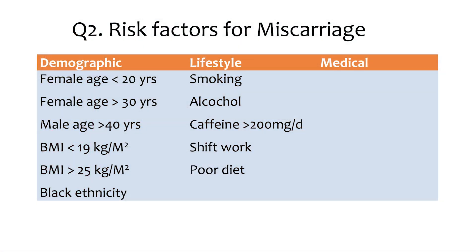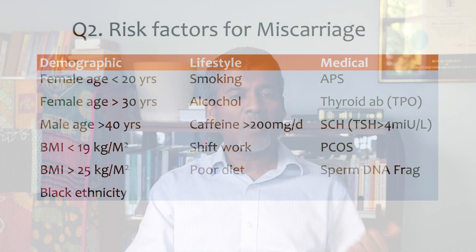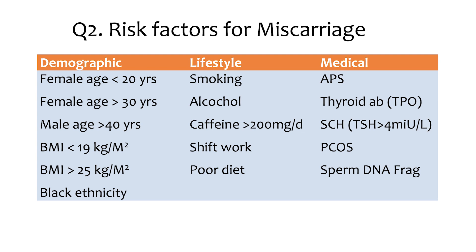Moving on to lifestyle risk factors, these include smoking, alcohol, excess caffeine, and shift work. Medical risk factors include antiphospholipid syndrome, thyroid autoimmunity, subclinical hypothyroidism, polycystic ovary syndrome, and DNA fragmentation in the sperm — all risk factors for miscarriage.